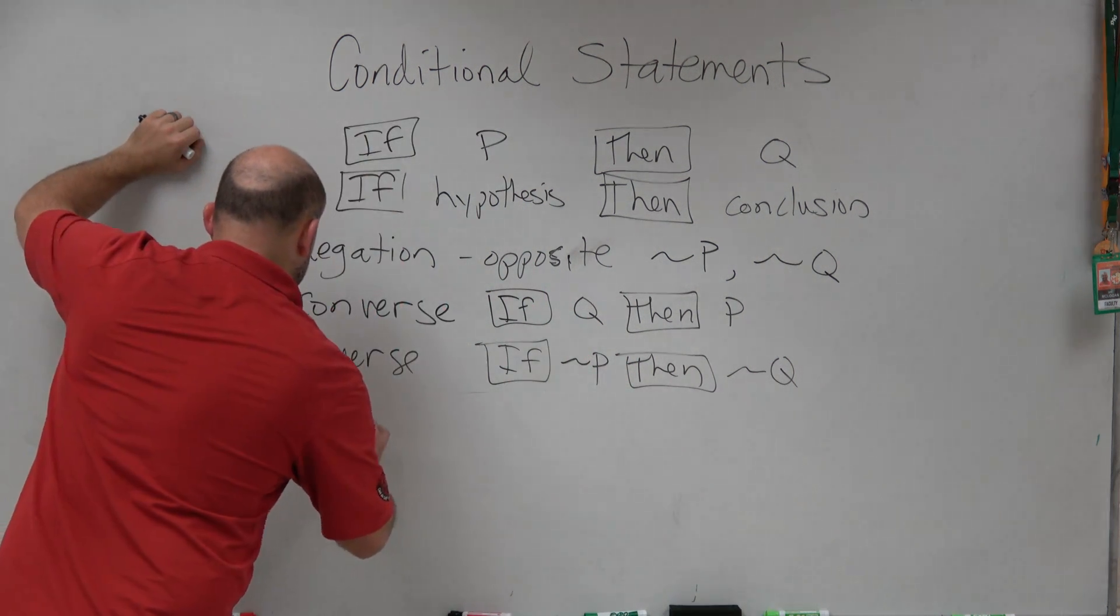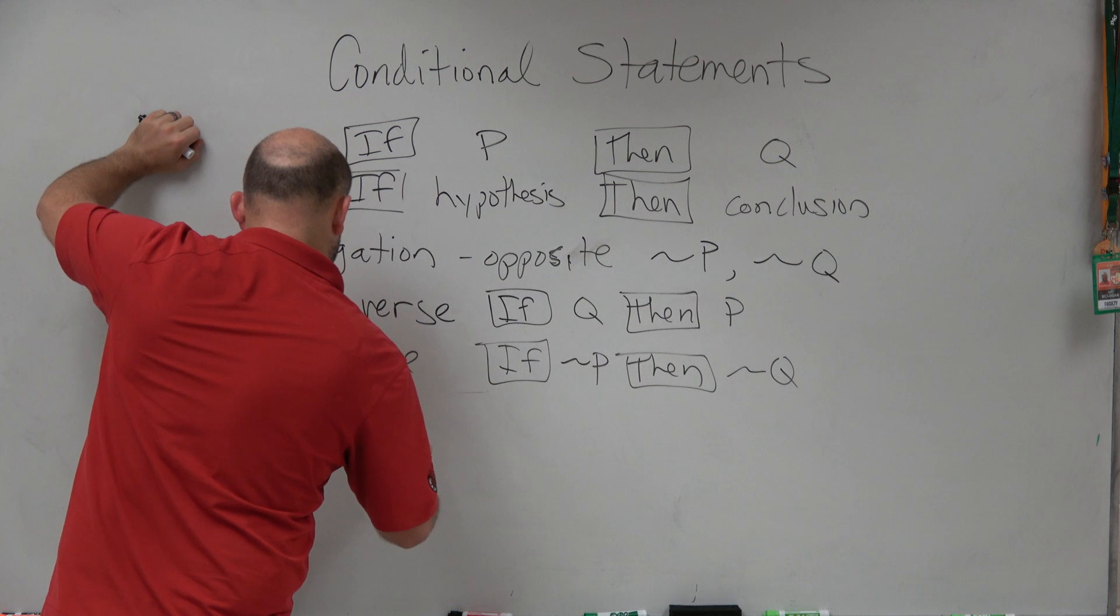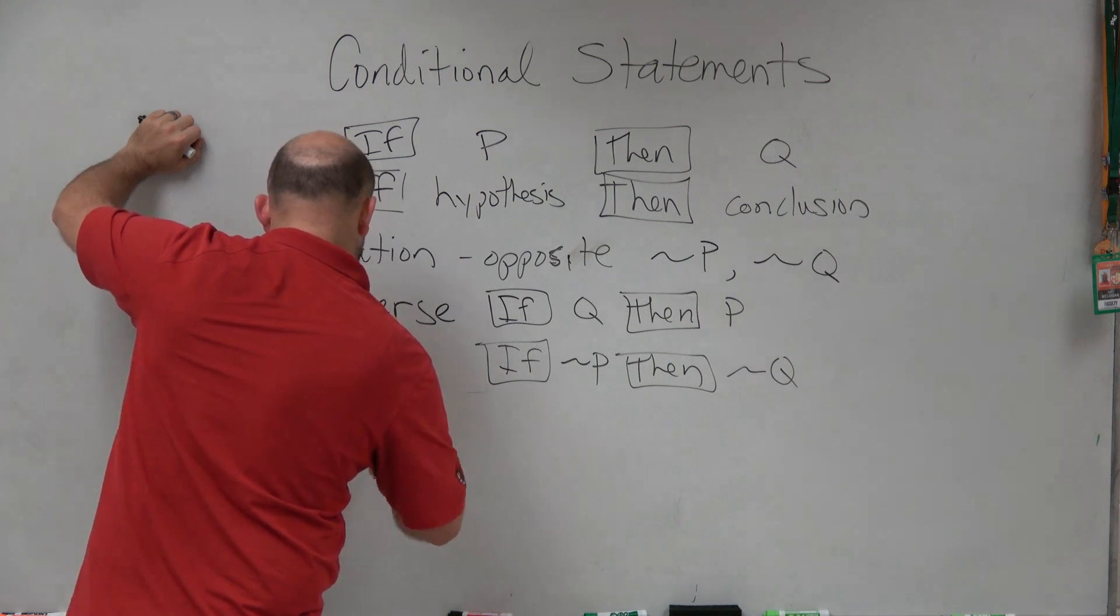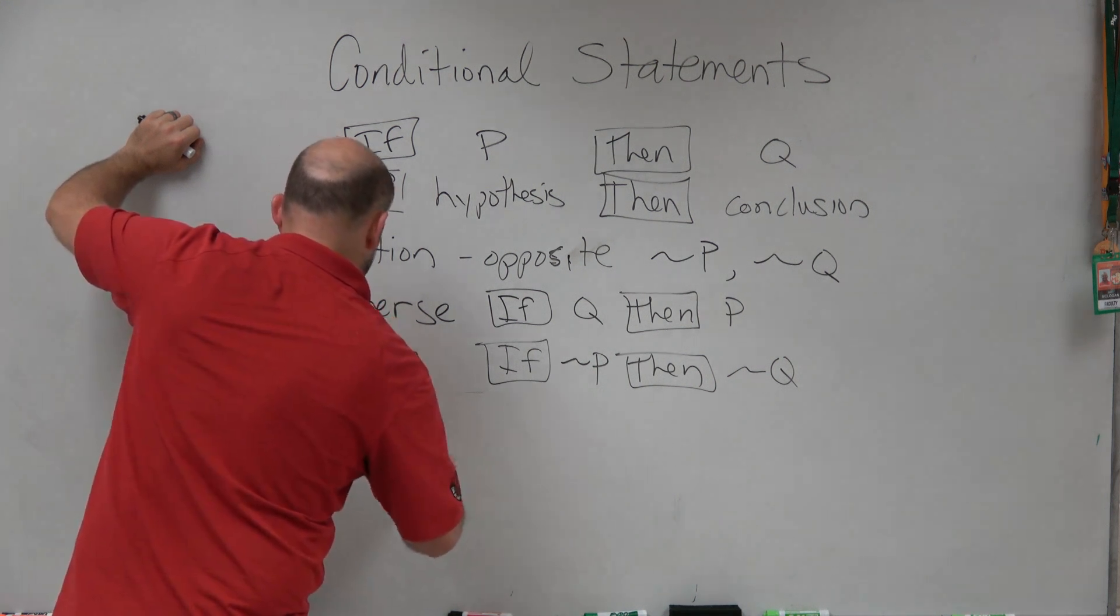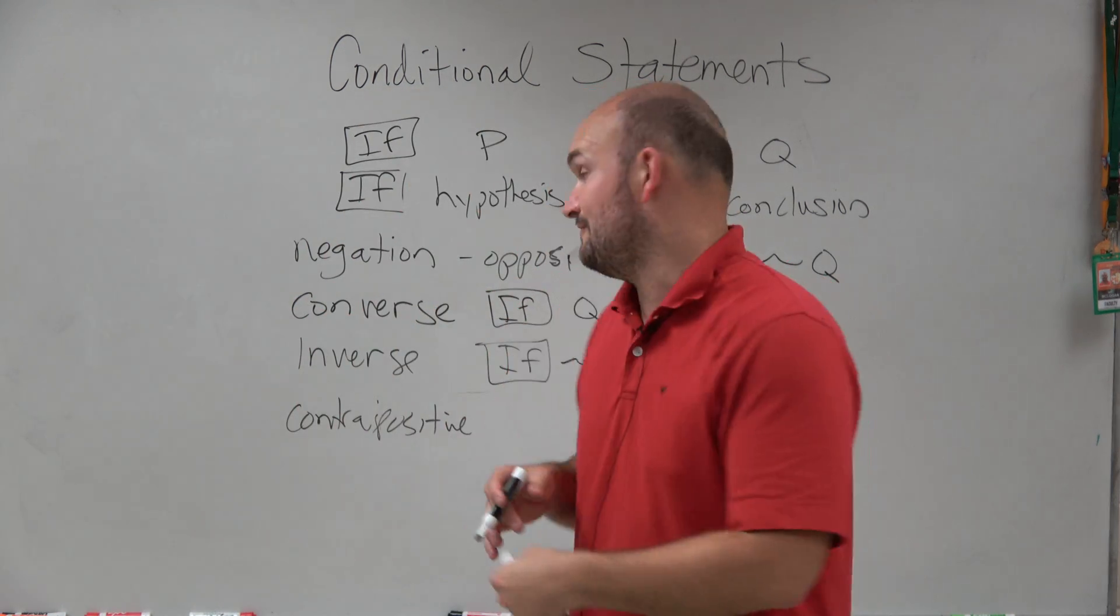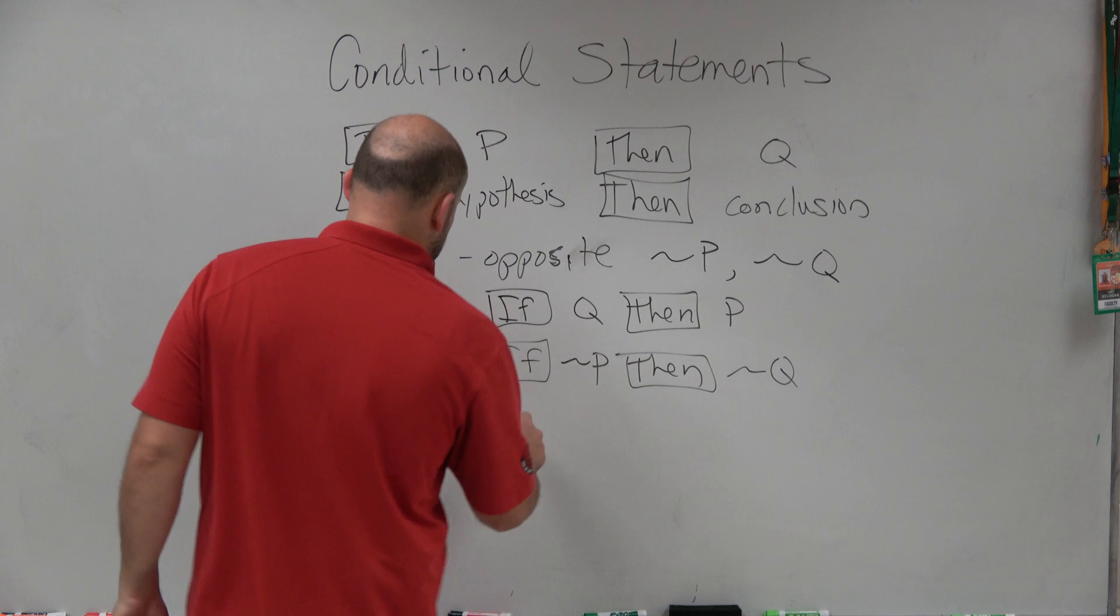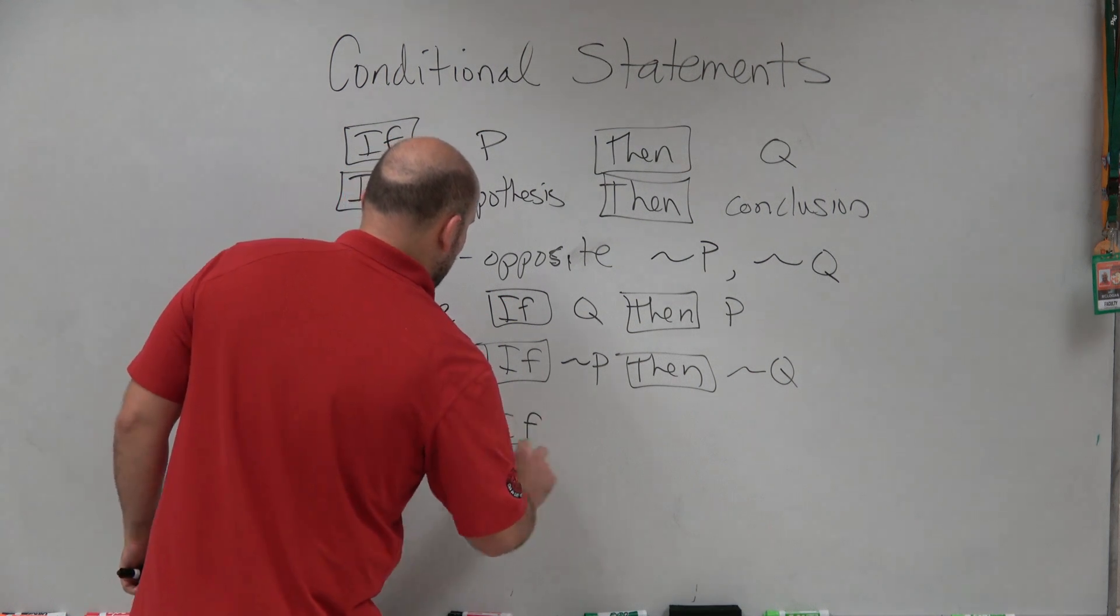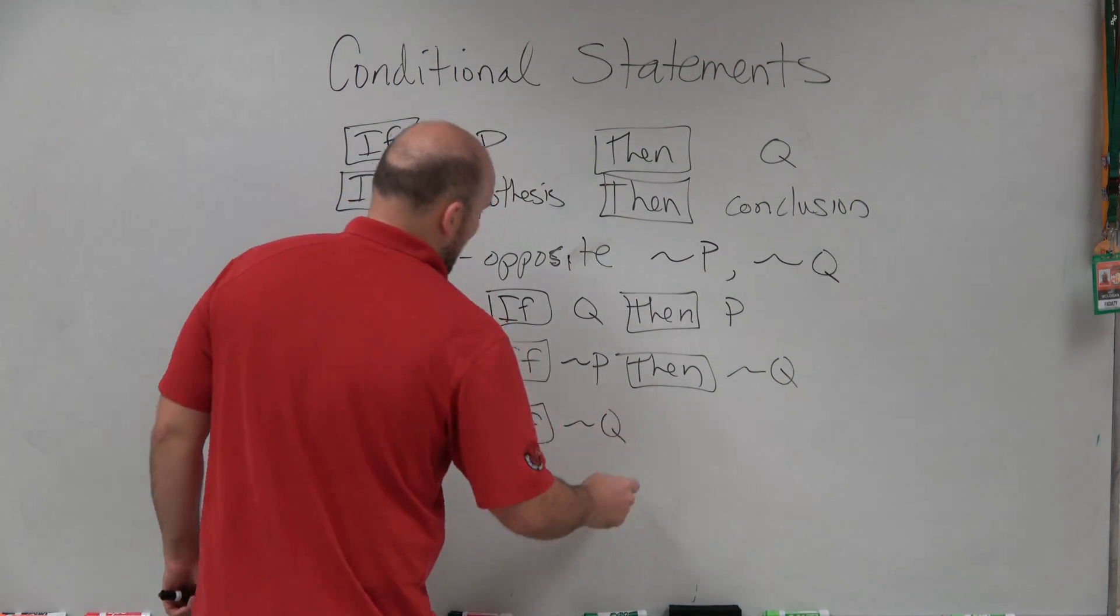The last one is the contrapositive, which is a mix of the converse and inverse. We swap and negate them: if opposite of q, then opposite of p.